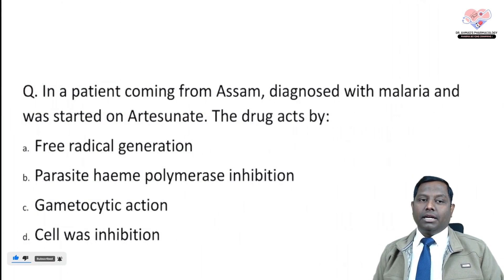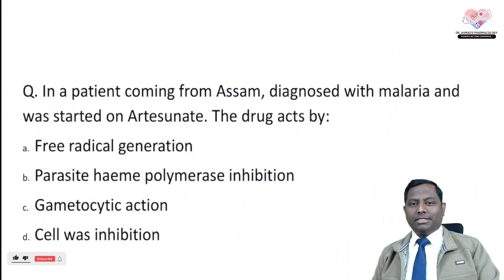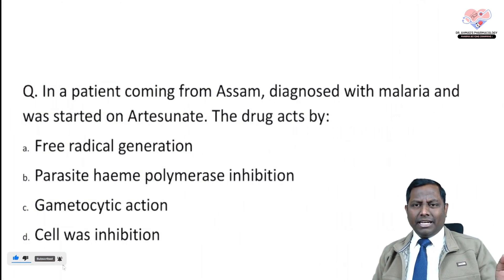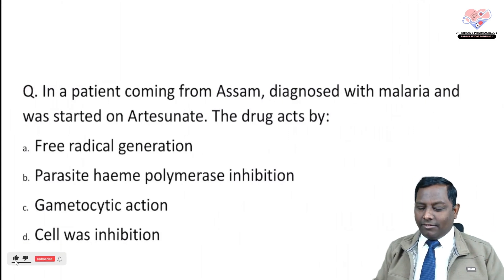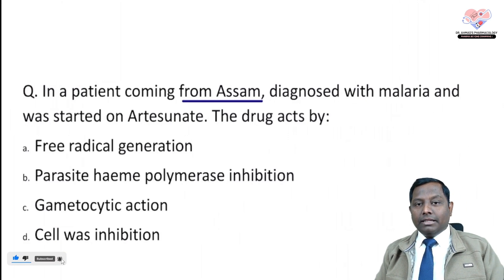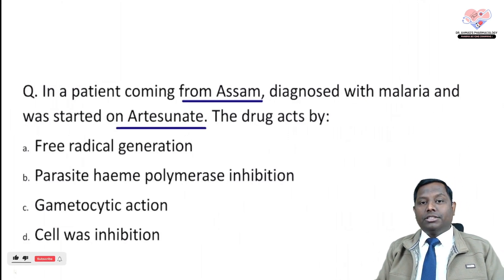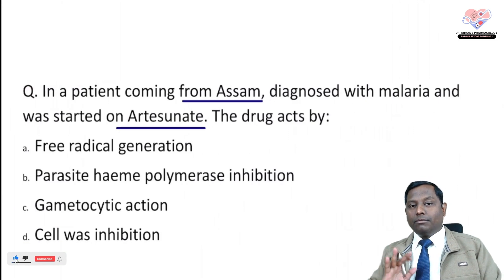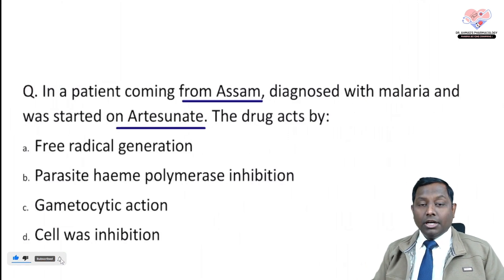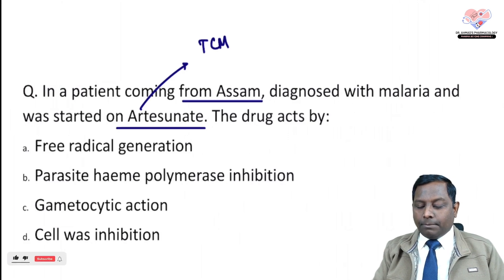The very first question is about a patient coming from Assam diagnosed with malaria who was on artesunate. This drug acts — and don't you think a similar kind of question I have already given in around episodes 17-19, where they asked how you will treat this? This time they have given that the patient has already been treated and ask for the mechanism of action. So artesunate is a drug derived from TCM — traditional Chinese medicine.